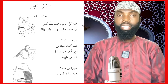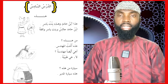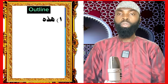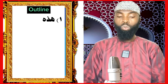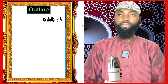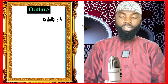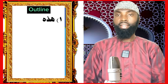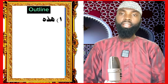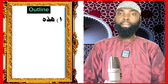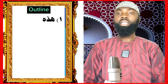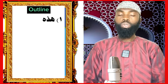Today we're going to continue from ad-Darsu as-Sadis, which is the 6th lesson. Under this lesson we're going to learn هَذِهِ. هَذِهِ is the feminine form of the word هَذَا. It is pronounced as هَذِهِ, with an alif madd between the ha and the dha. The word هَذِهِ is used when demonstrating or pointing to a feminine noun. We say هَذَا طَالِبٌ for a male student, and هَذِهِ طَالِبَةٌ for a female student.